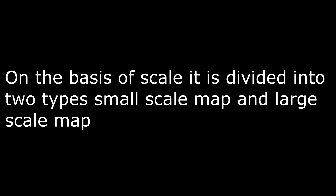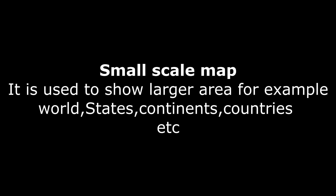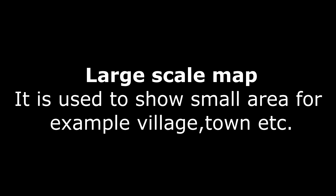On the basis of scale, maps are divided into two types: small scale map and large scale map. Small scale map is used to show larger areas, for example, world, continents, countries, states, etc. And large scale map is used to show smaller areas, for example, city, village, town, etc.